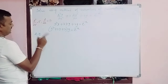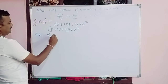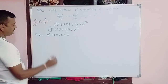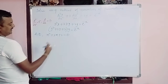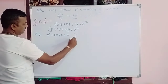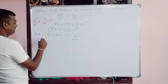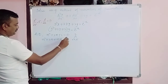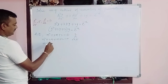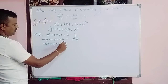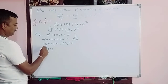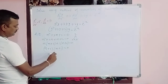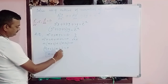Now write the auxiliary equation by replacing D with m and setting the right side equal to 0: m² + 3m + 2 = 0. Factoring this: (m + 2)(m + 1) = 0, giving roots m = -2 and m = -1, which are distinct real roots.